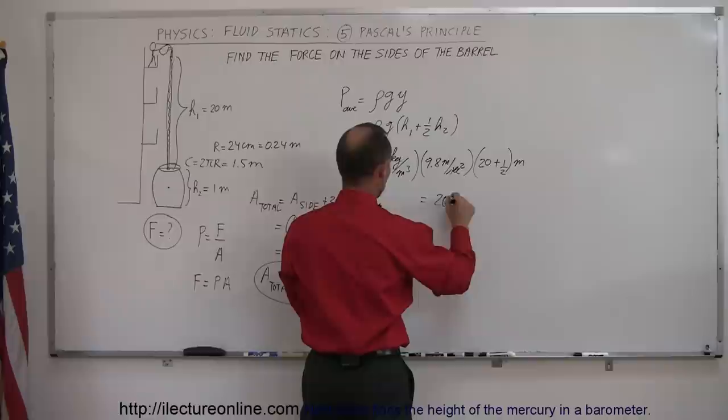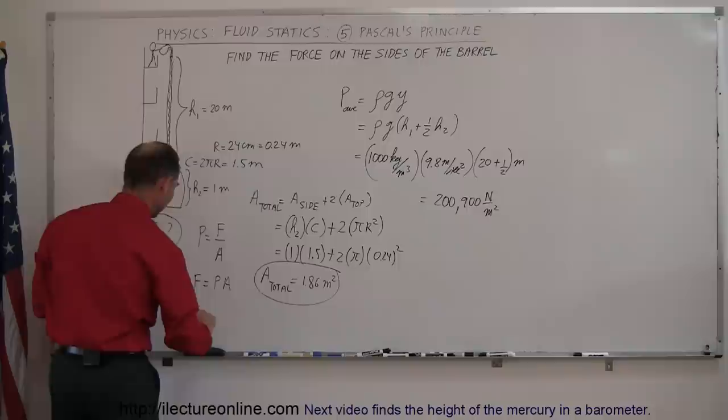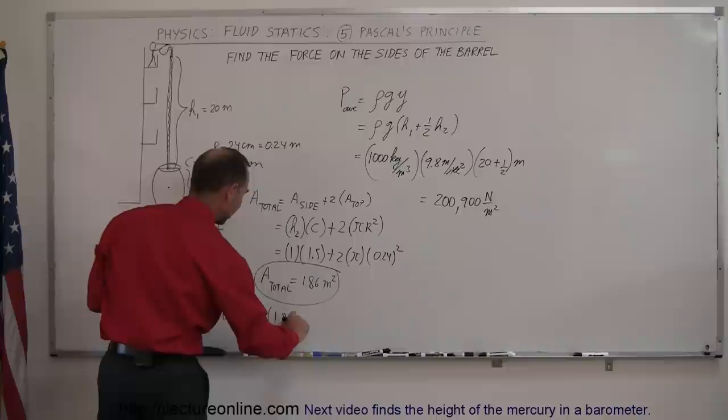Now we combine those two. We take the pressure that we found and multiply times the area. So the total force equals the pressure, which is 200,900 N/m², and multiply that times an area of 1.86 square meters.